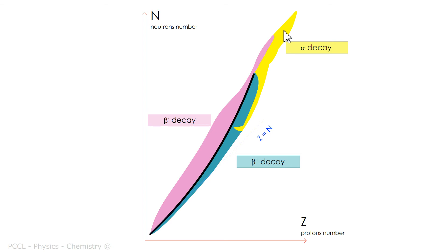Alpha decay, on the other hand, concerns nuclei that are too heavy, which release mass, that is to say 4 nucleons at the same time.